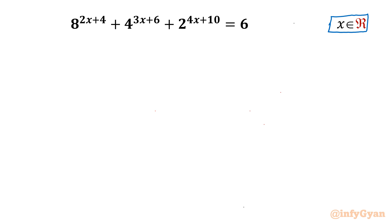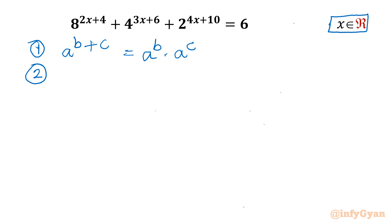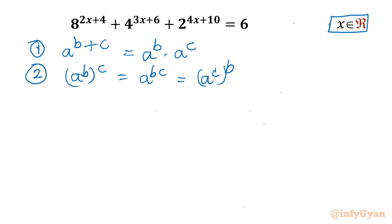Let's get started by writing two most powerful properties of exponents. Property number 1: a^(b+c) = a^b × a^c. Property number 2: (a^b)^c = a^(bc).